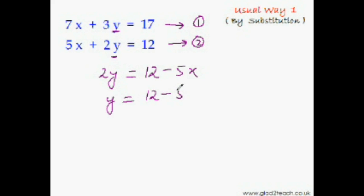So now take this 2 to the other side as well. We will have y equals 12 minus 5x divided by 2, as this 2 was being multiplied here.